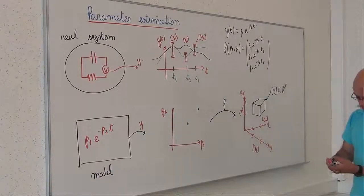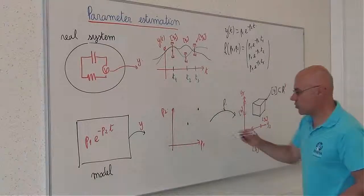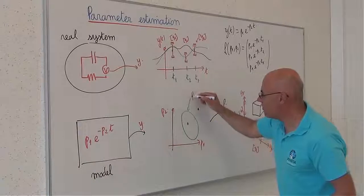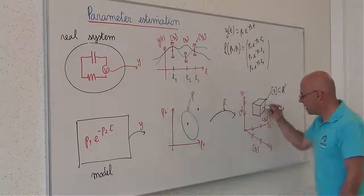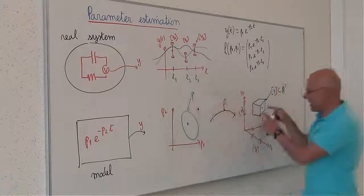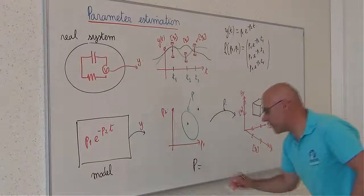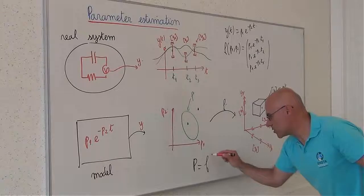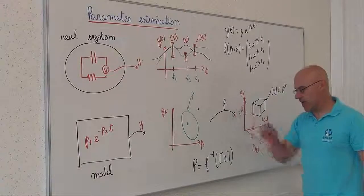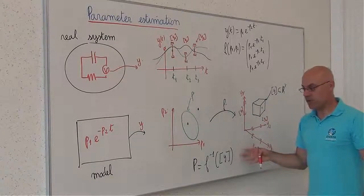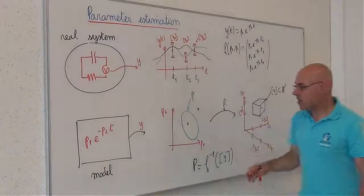And the feasible parameter vector corresponds to the set of all P that are mapped via the simulator function inside this box. So, my feasible parameter vector corresponds to the inverse of the box Y by the simulator function F. As a consequence, in a bounded error context, the parameter estimation problem is a set inversion problem.